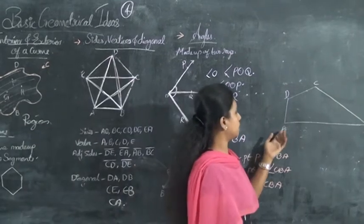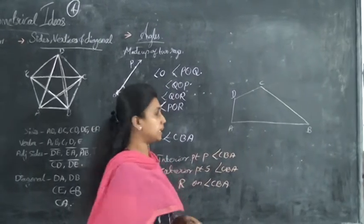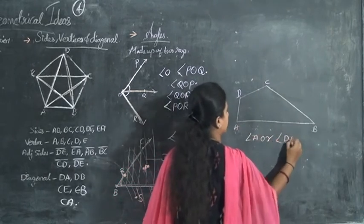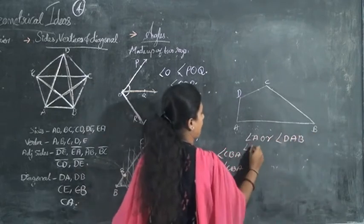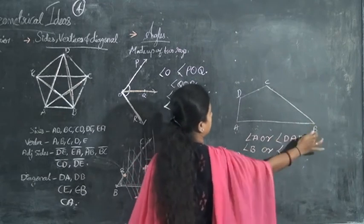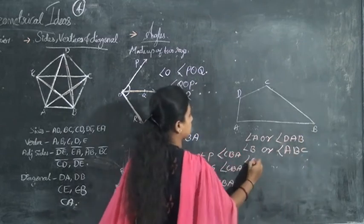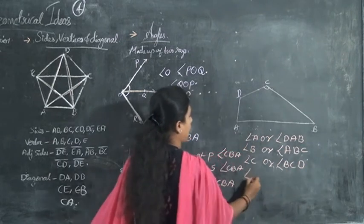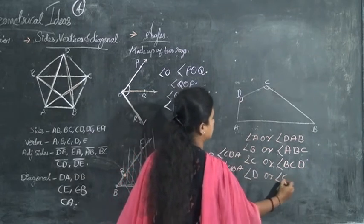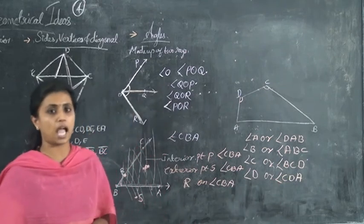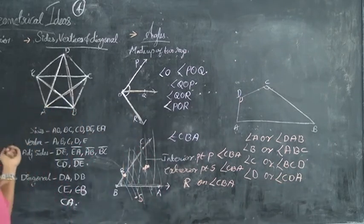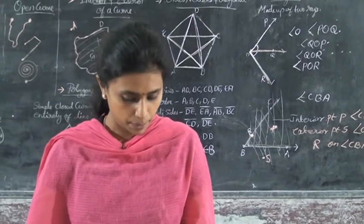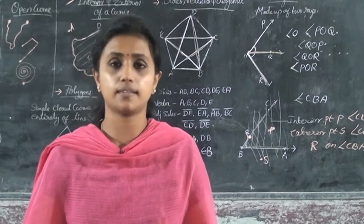Here, you want to name the angles of this figure. You can say it as angle DAB, angle B or angle ABC, angle C or angle BCD, and angle D or angle CDA. In this way we can represent the angles. Now I will give you an activity: page number 78, exercise 4.2, and page number 80, exercise 4.3. Try to do these problems, children.